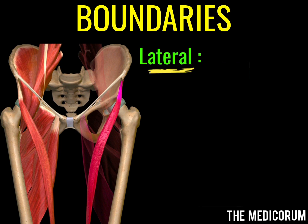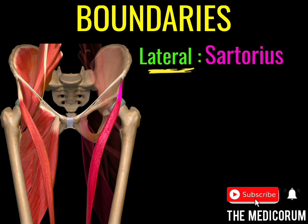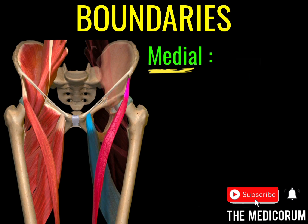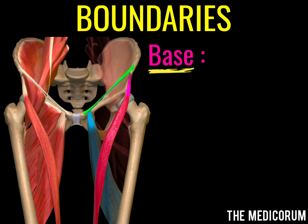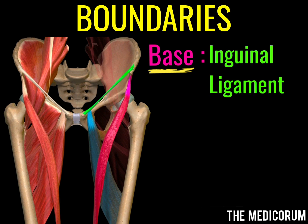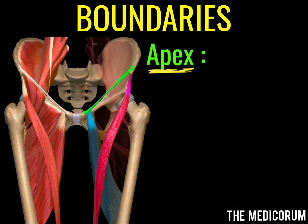Boundaries of the femoral triangle: it is bounded laterally by the medial border of the sartorius muscle. On the medial side, we have the adductor longus muscle, and the base is formed by the inguinal ligament, as the femoral triangle lies just below it.